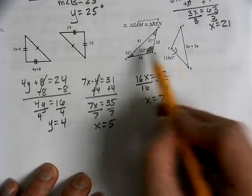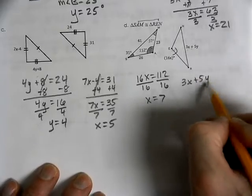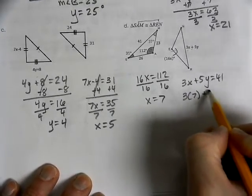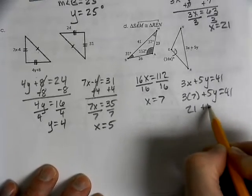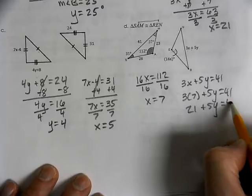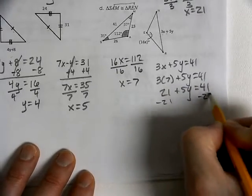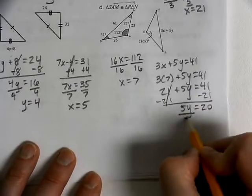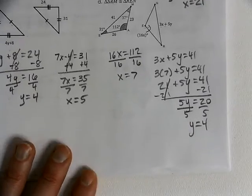And, then, as we go to our last one, 3X plus 5Y equals 41. 3 times 7 plus 5Y equals 41. 21 plus 5Y. Subtract across our 21. 5Y equals 20. And, Y would have to be 4. We're done!